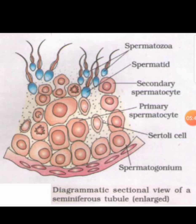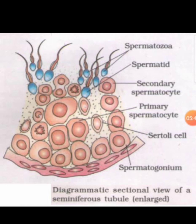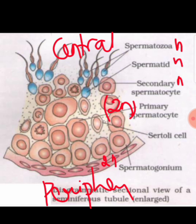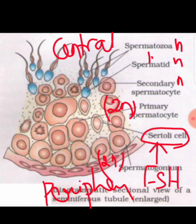The next very important diagram is the sectional view of the seminiferous tubule. Remember: spermatozoa is haploid, spermatid is haploid, secondary spermatocyte is haploid, primary spermatocyte is diploid, and spermatogonium is also diploid. There is a Sertoli cell that nourishes the developing sperm, and FSH (follicle stimulating hormone) acts on the Sertoli cell. The conversion of spermatid into spermatozoa is called spermiogenesis — conversion of inactive, immotile spermatid into active, motile spermatozoa.